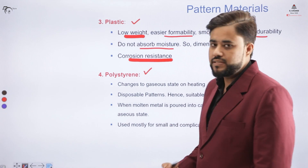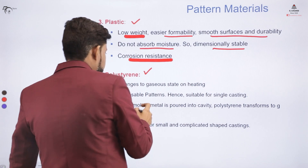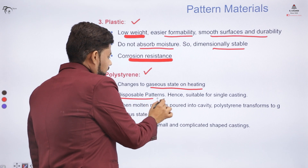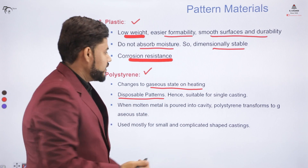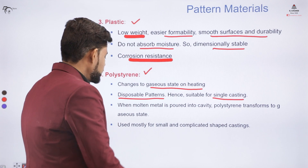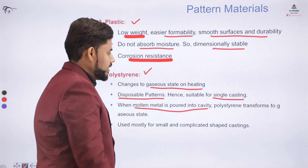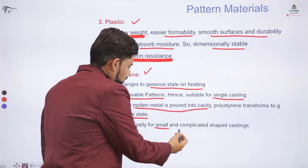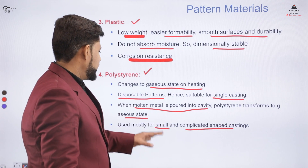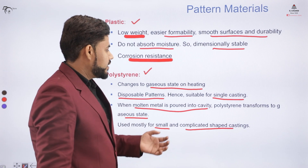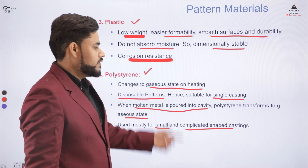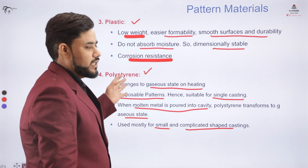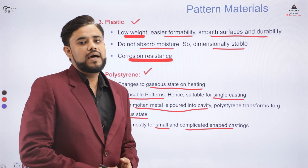The other category of pattern material is polystyrene. Polystyrene transforms to a gaseous state when heated. Polystyrene patterns are generally disposable patterns, suitable only for single castings. When molten metal is poured into the cavity, the polystyrene transforms into the gaseous state. It is usually made for small and complicated shaped castings. It is a one-time pattern — after use it transforms to gas, making it a disposable pattern. So we have learned about wood, metal, plastic, and polystyrene as pattern materials.